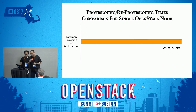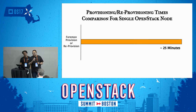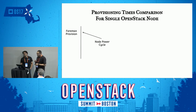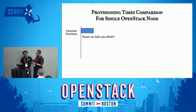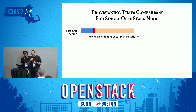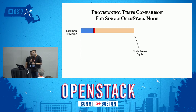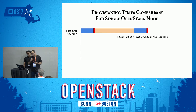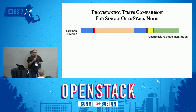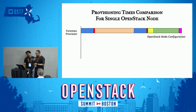Here is an example showing that to provision an OpenStack compute node using a widely-used provisioning system such as Foreman, it takes around 25 minutes. When you want to provision it, you power cycle your node, it does a power-on self-test followed by sending a PXE request, then your kernel is downloaded and your OS is installed to the local disk. Then your node does another power cycle and another POST followed by a PXE request, your OS boots up, and you install any OpenStack-related packages followed by configuration changes. This entire process takes 25 minutes.